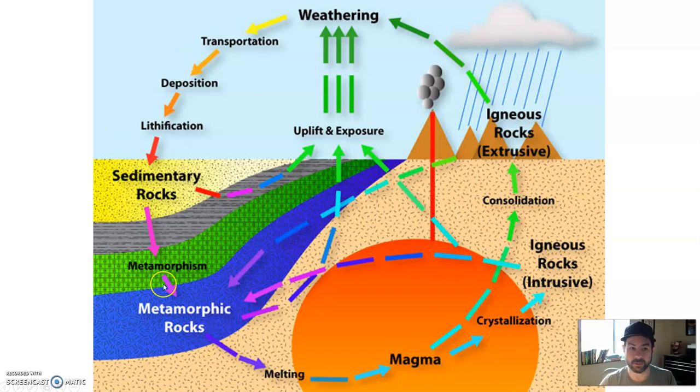Now, it doesn't always have to go in that circle. It could go from igneous rock to metamorphic rock, back to igneous rock, over to sedimentary rock. It goes any which way. For the sake of the story, we'll first talk about igneous rocks, sedimentary rocks Unit 7, metamorphic rocks Unit 8.